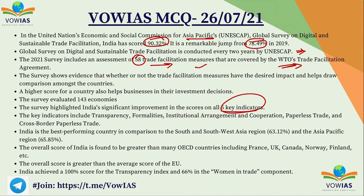The five key indicators are: transparency, formalities, institutional arrangement and cooperation, paperless trade, and cross-border paperless trade. India is the best performing country compared to other South and Southwest Asian region partners and even the Asia Pacific region. India is improving a lot on the business front, which will enhance India's stature in the international market.